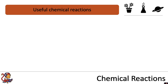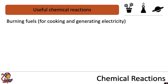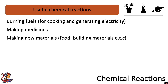There are many useful chemical reactions. For example, burning fuels — this is a chemical reaction that we use for cooking and generating electricity. We can use chemical reactions to make medicines, or we might be making new materials, like food or building materials. Many of these involve using chemical reactions.